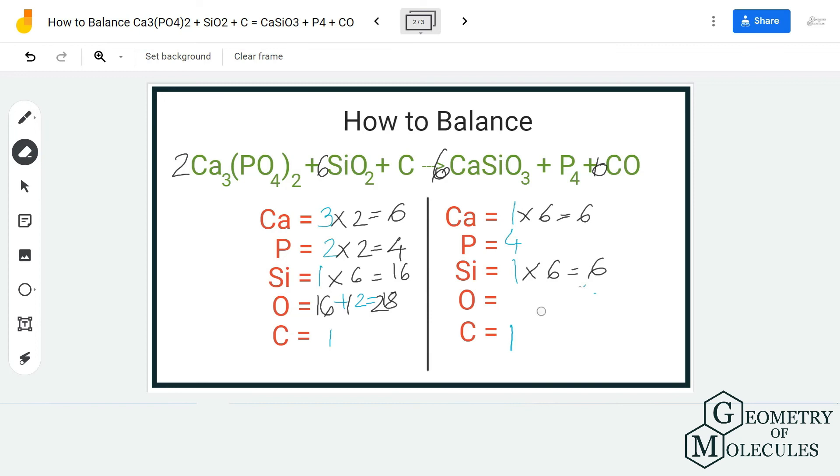And now to balance it off, add a coefficient two on the reactant side. As I said, it is very easy to balance the molecule, an element which is all alone. Do that, and now you have same number of atoms for calcium, phosphorus, silicon, oxygen, and carbon.